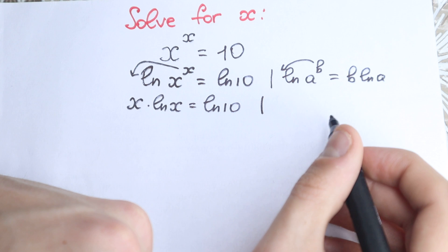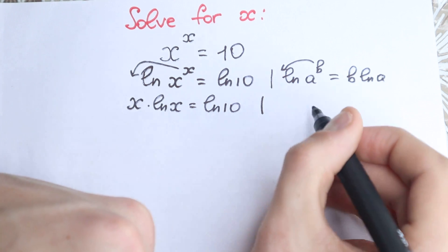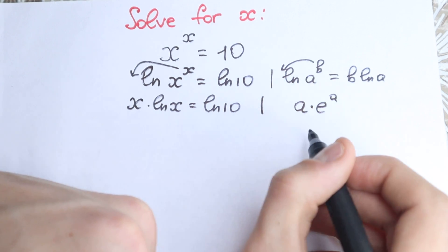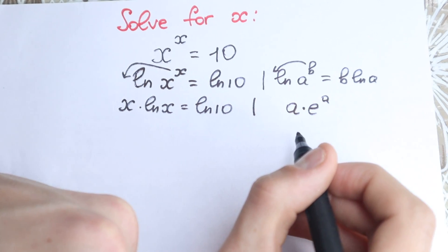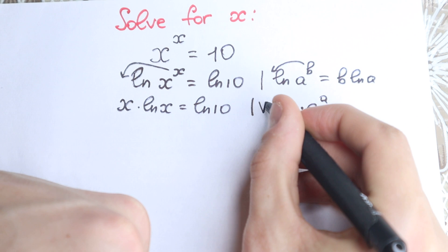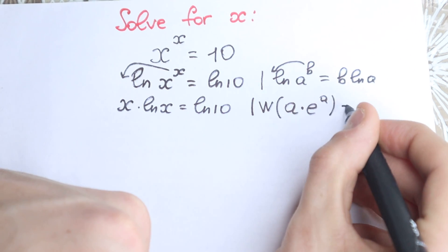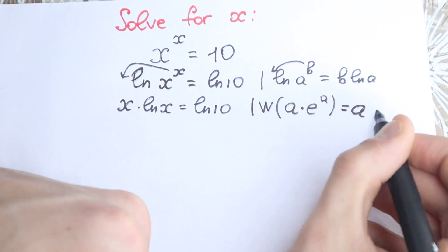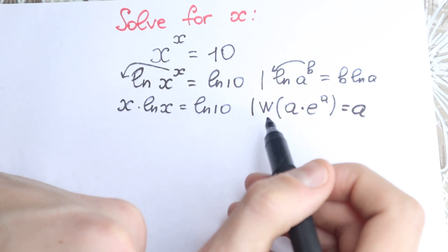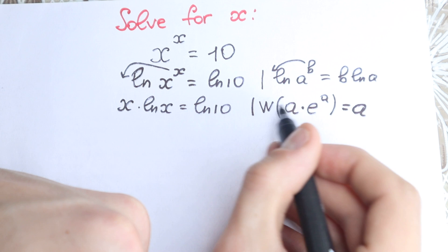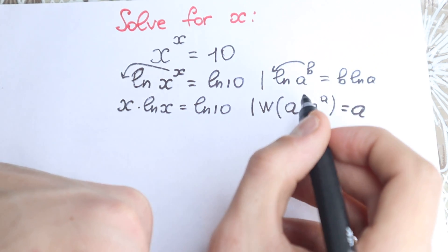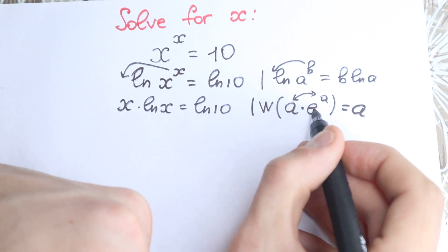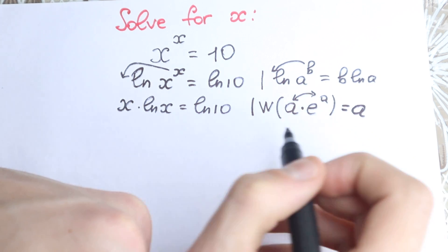This is a really great function and a lot of students have difficulties with it, so I'm going to explain it simply. Just imagine you have an expression like a times e to the power a. If you apply the Lambert W function to this expression, it gives us only our a. Where a is any expression — maybe complicated, maybe not. The main key is we need to have the same expression as a here and as the power of e.